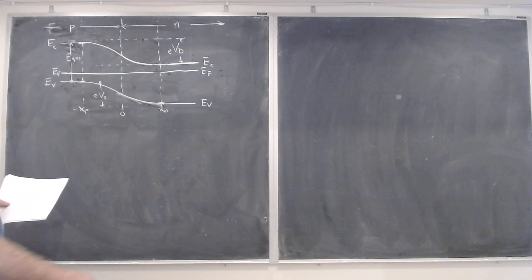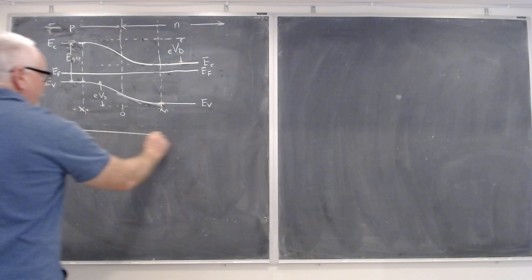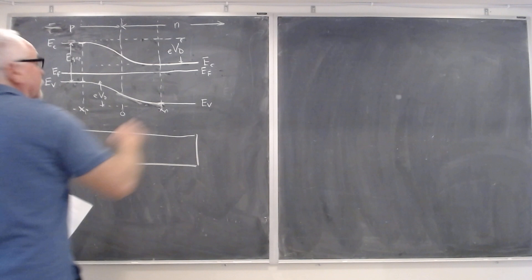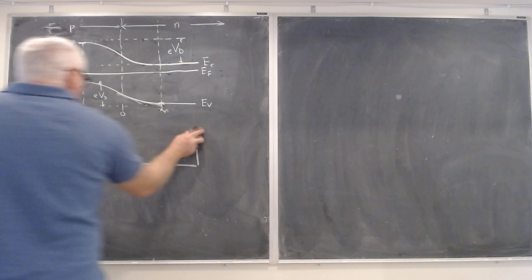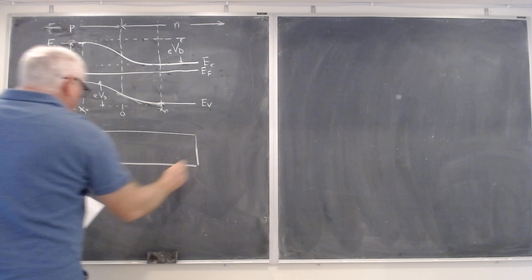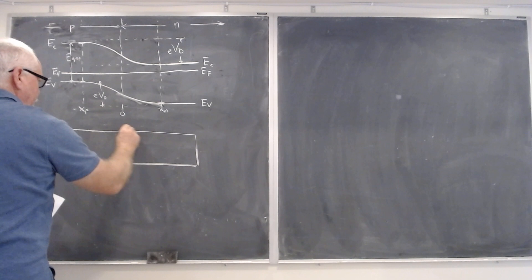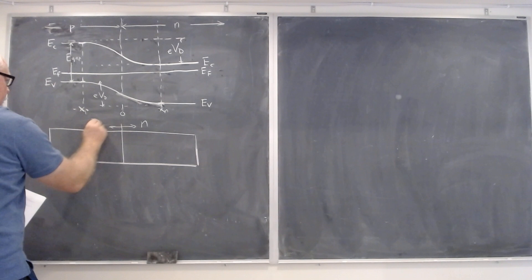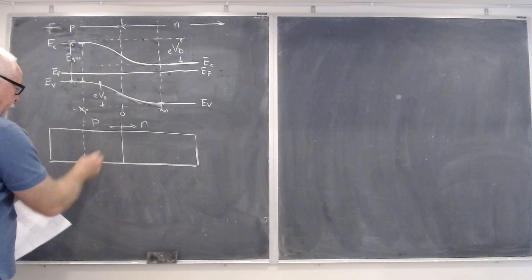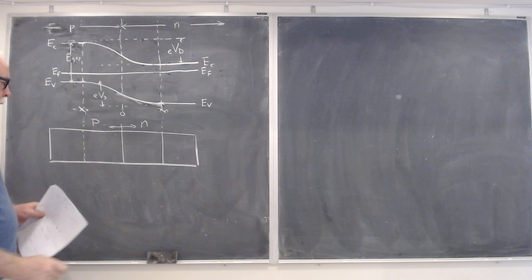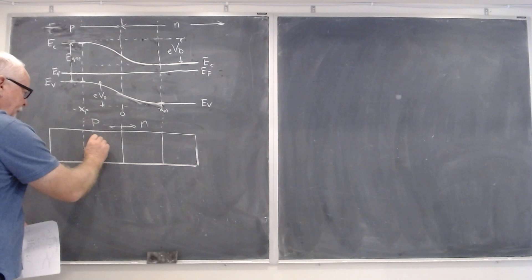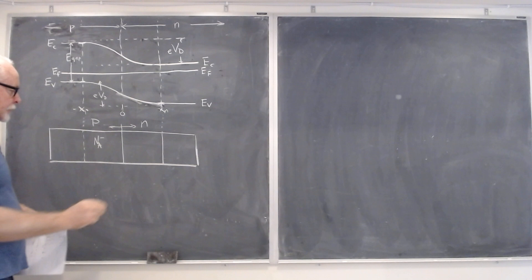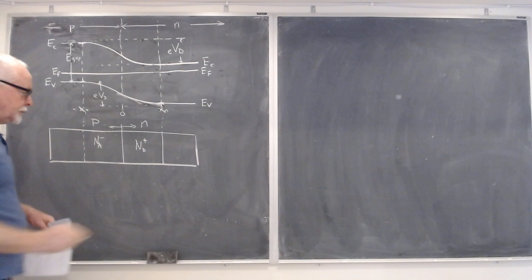I left up our band diagram versus X from last lecture, and I'll go ahead and redraw our diode here. Here's our junction — that side is N, that side is P. Here are our depletion regions. In this region, these are the space charge regions. In this region you just have acceptor ions, which are negatively charged, and in this region you have donor ions, which are positively charged.